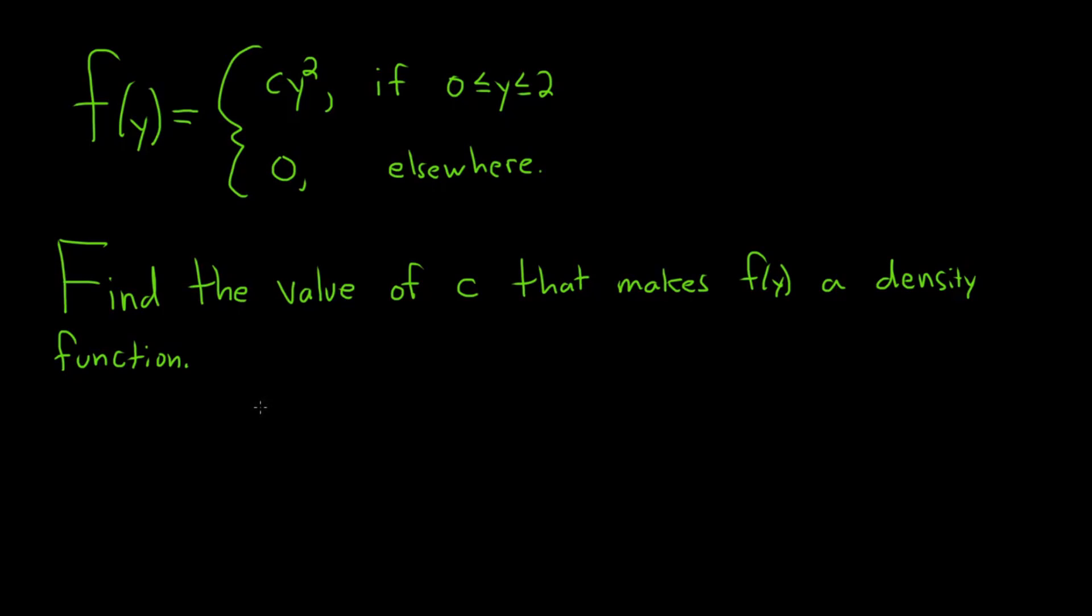So for it to be a density function, it has to be non-negative and that's already satisfied. Here it's 0, so that means it's non-negative. And here y is being squared when y is between 0 and 2, so everything there should be fine as long as c is greater than or equal to 0.